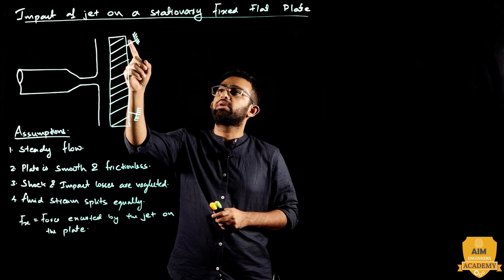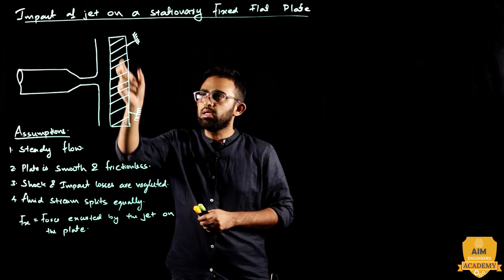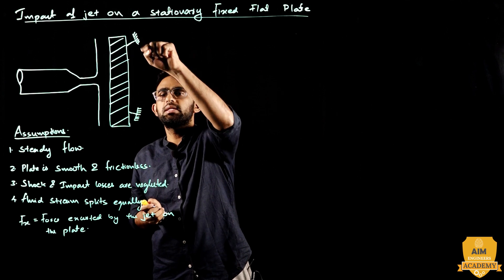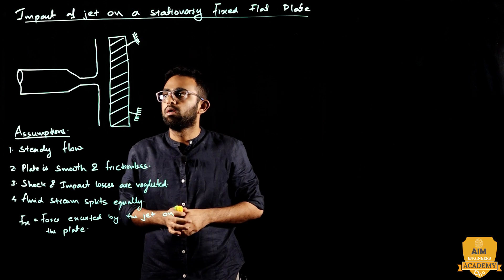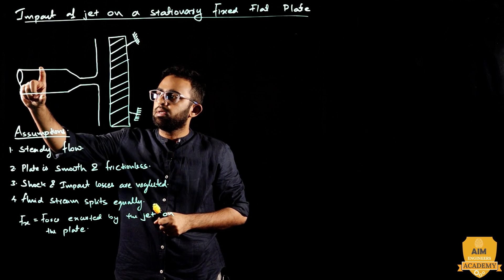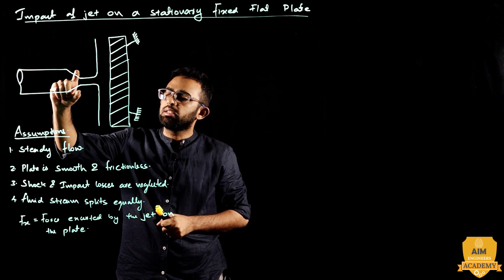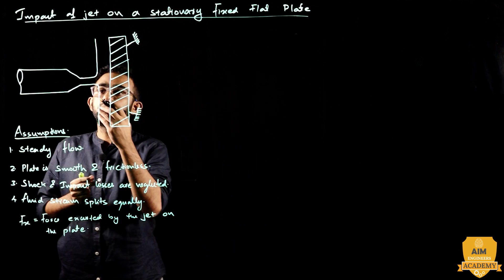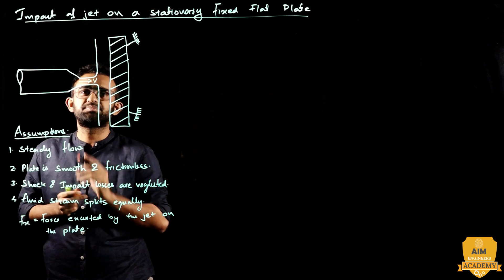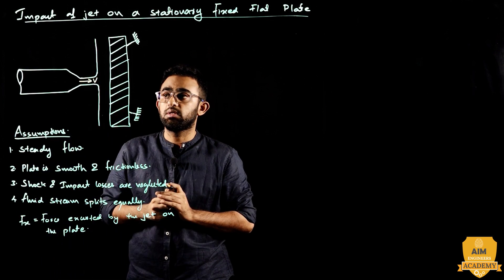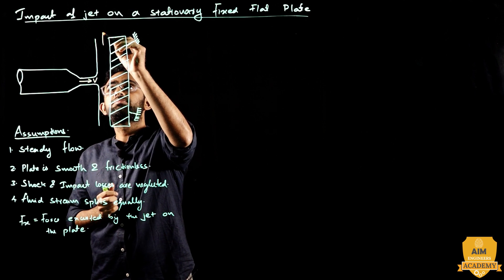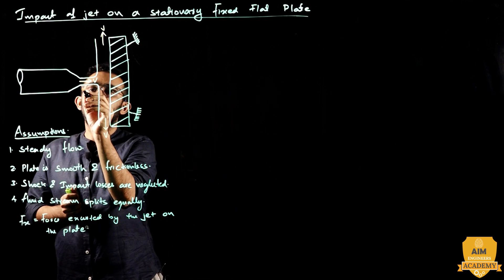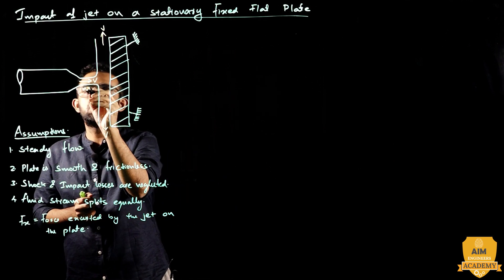Impact of jet: consider a stationary fixed flat plate. There is a pipe through which fluid flows, with a nozzle at the end to increase the velocity of the jet to a high velocity V. Let V be the high velocity. This jet of water enters with a mass flow rate M-dot.